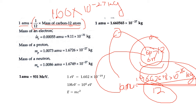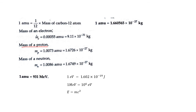In terms of AMU: the mass of the electron is approximately 0.0055 AMU (standard value: 9.11 × 10⁻³¹ kg); the mass of the proton is 1.0073 AMU (standard value: 1.6726 × 10⁻²⁷ kg); and the mass of the neutron is 1.0086 AMU (standard value: 1.6749 × 10⁻²⁷ kg).